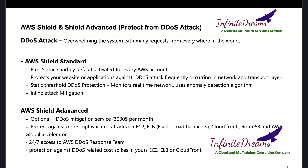Behind the scenes, AWS Shield Standard uses an anomaly detection algorithm. It checks your real-time network traffic, and if it finds any sort of anomaly it will detect it, let you know, and throttle the extra requests coming in. It will also mitigate such types of attacks.